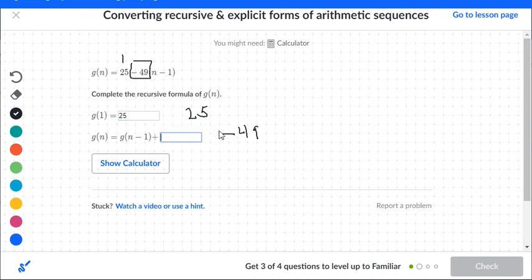Here we simply type in negative 49. Again, the plus sign is there by default. You've got to put in the negative 49.